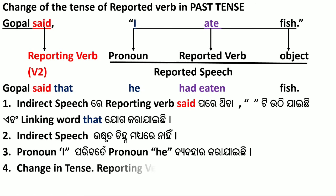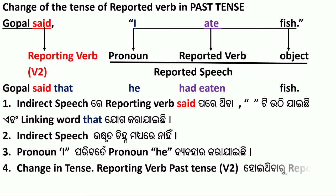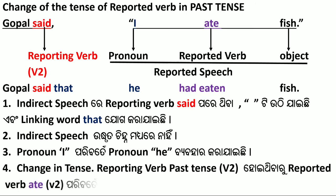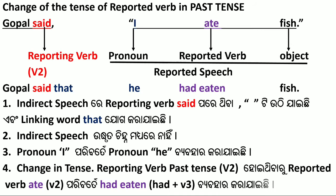Change in tense. When the reporting verb is in past tense (second form), the reported verb changes: V2 (ate) is replaced by 'had' plus V3 (had eaten). This is how the tense change is applied.